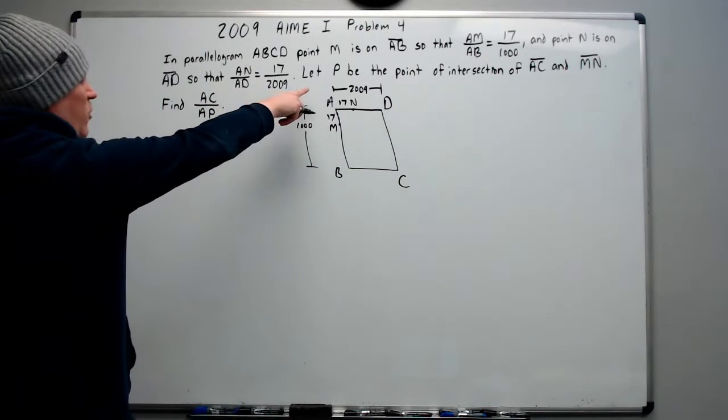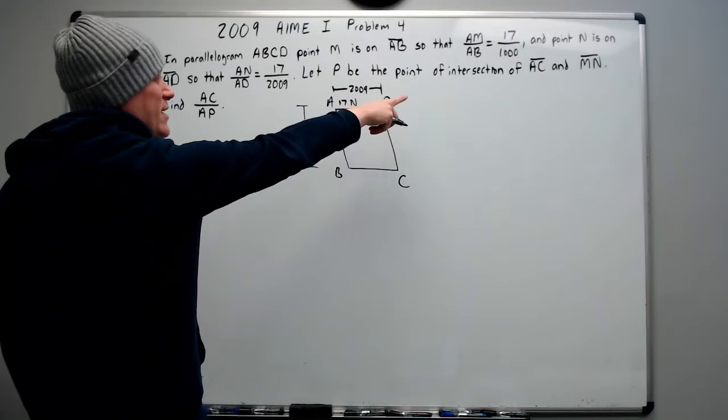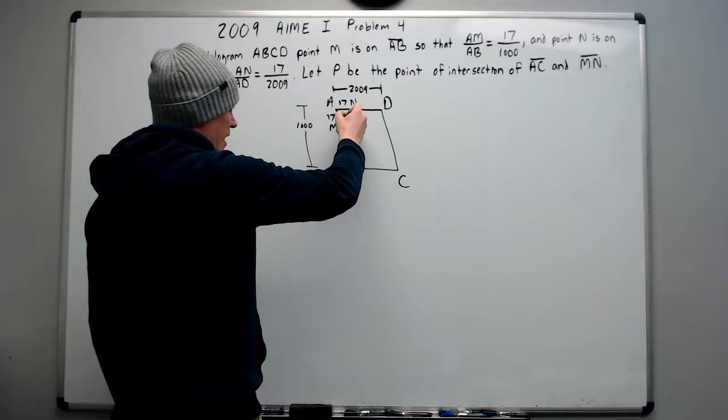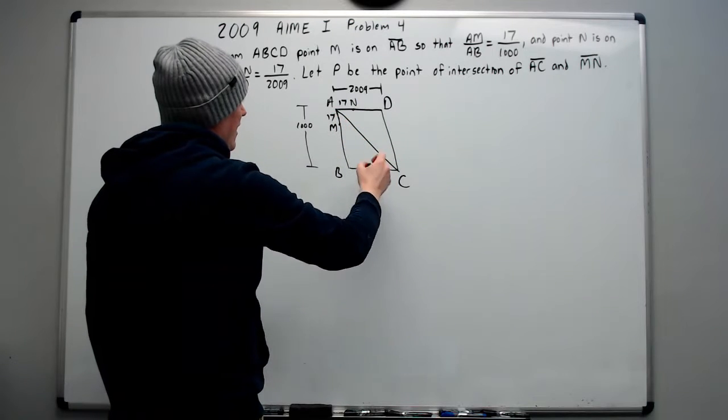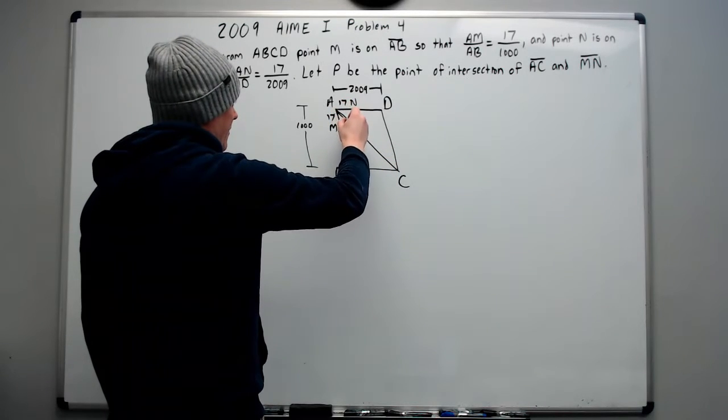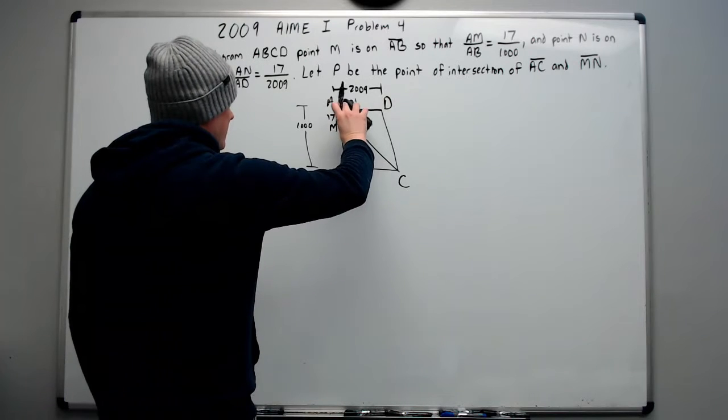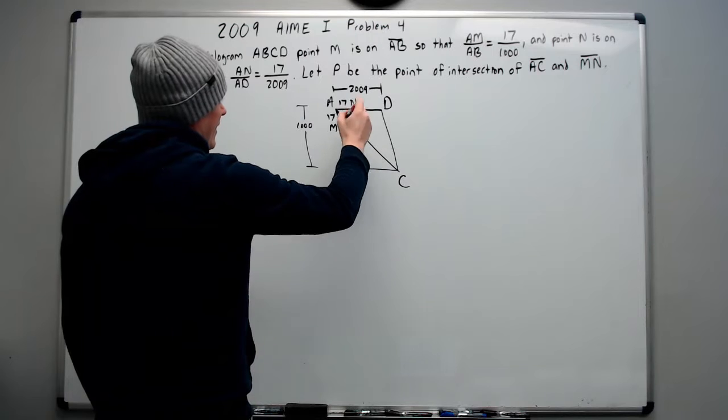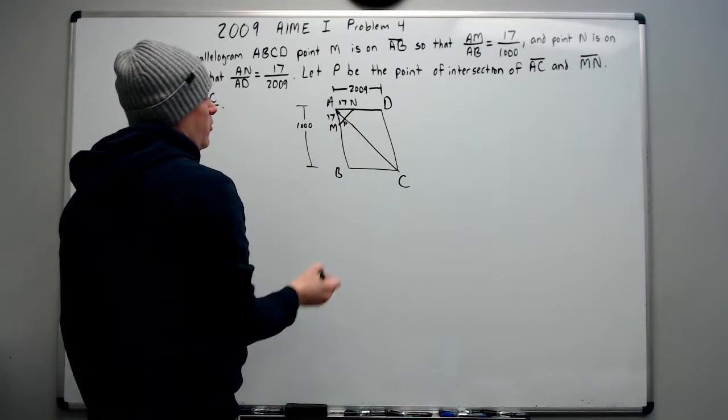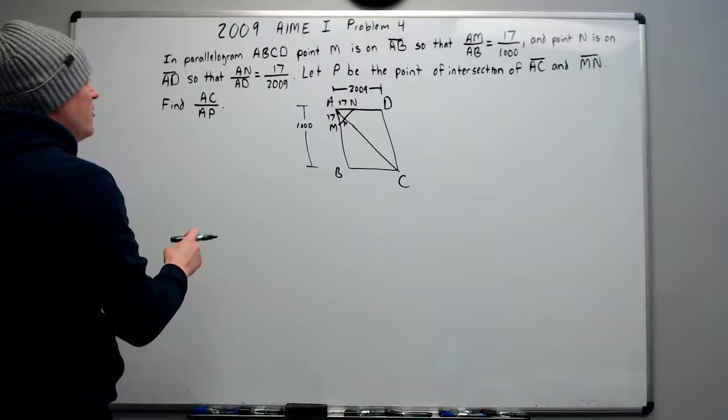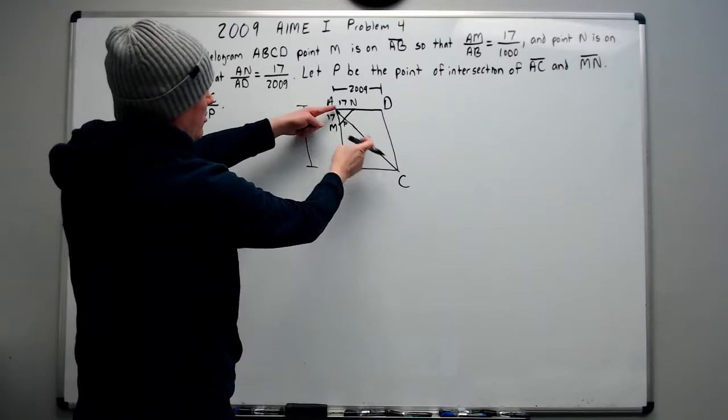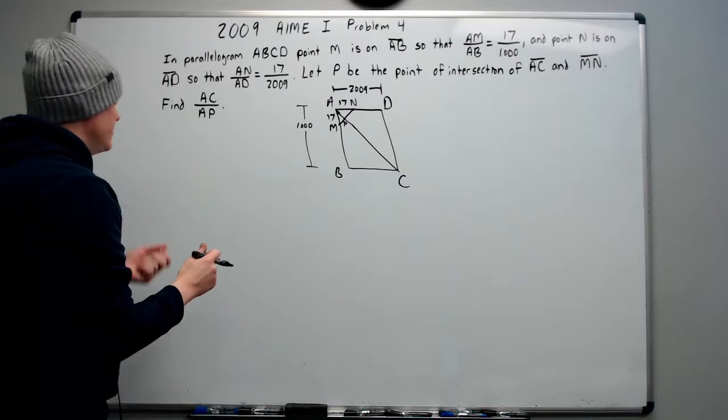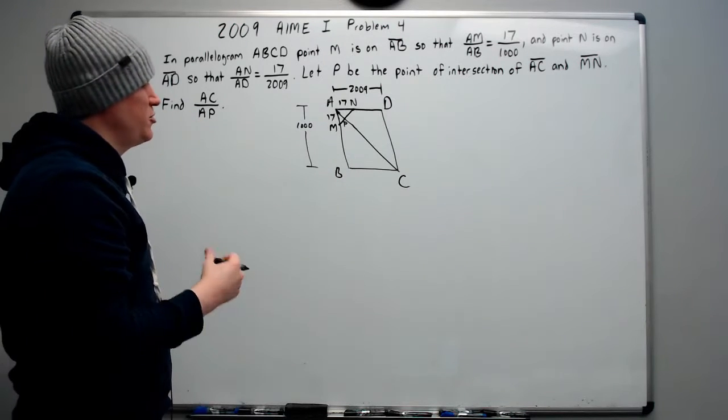You don't want to redraw the picture just for stuff like that. So then we say what? Let P be the point of intersection of AC, which we don't have drawn, so we should draw A to C, and MN. So MN is not drawn either, so we'll add it in, and P will be this point right here. Find AC over AP.